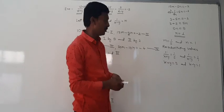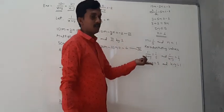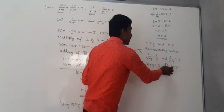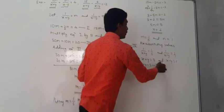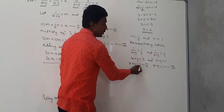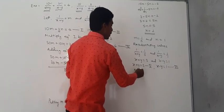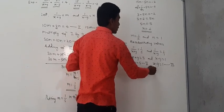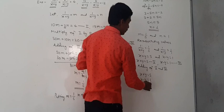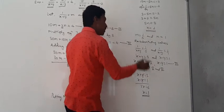We represent x plus y equals 5 as equation 5, and x minus y equals 1 as equation 6. Adding equations 5 and 6: the y terms cancel (plus y minus y), giving 2x equals 6, so x equals 3.